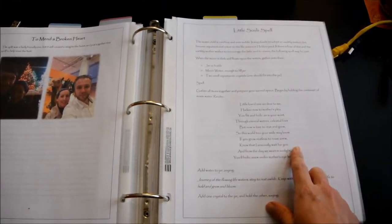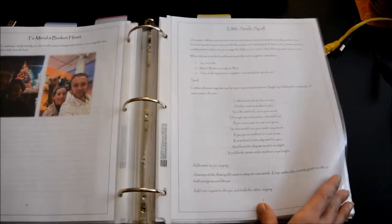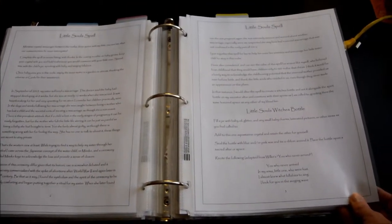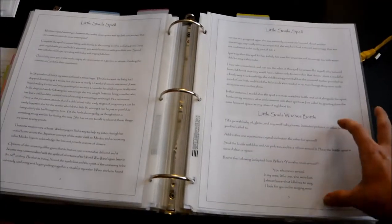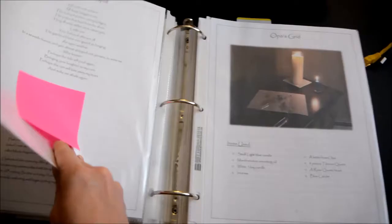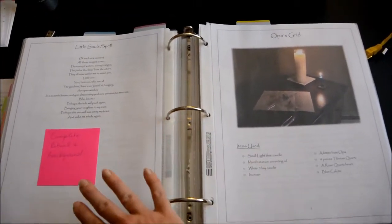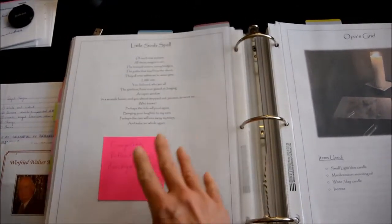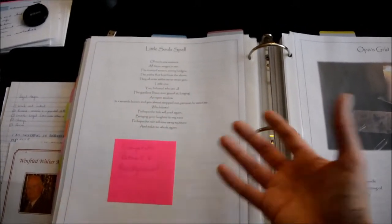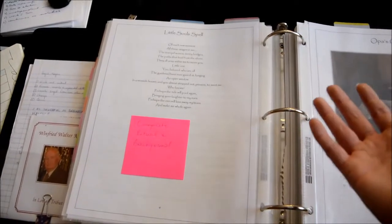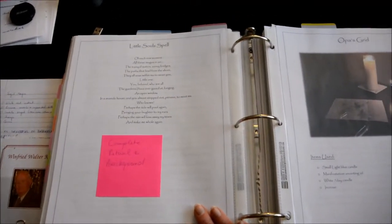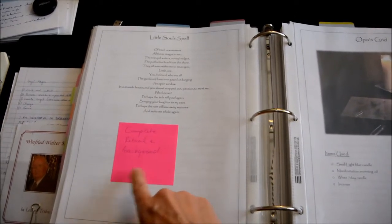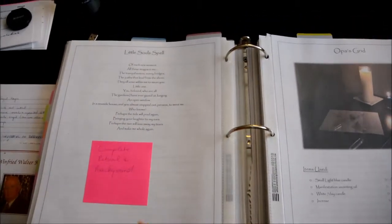Here I have the little soul spell that I did as a spell to follow a miscarriage for someone who had that happen. I do still need to include the ritual. I want to create a little souls ritual that can be done with a group of women to support the mother. I have notes here about things I need to include and background on the Japanese ceremony.